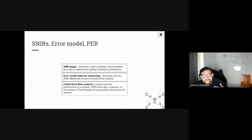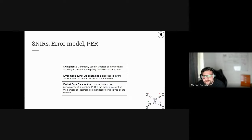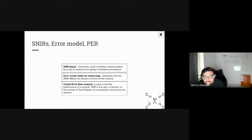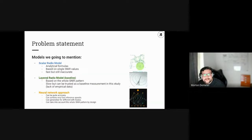What are SNRs? What is an error model? What is PER exactly? First, SNR — which is going to be our input — is commonly used in wireless communication as a way to measure the quality of wireless connections. An error model, which we are enhancing, describes how the SNR affects the amount of errors at the receiver. Packet error rate, our output, is the ratio in percent of the number of test packets not successfully received by the receiver.